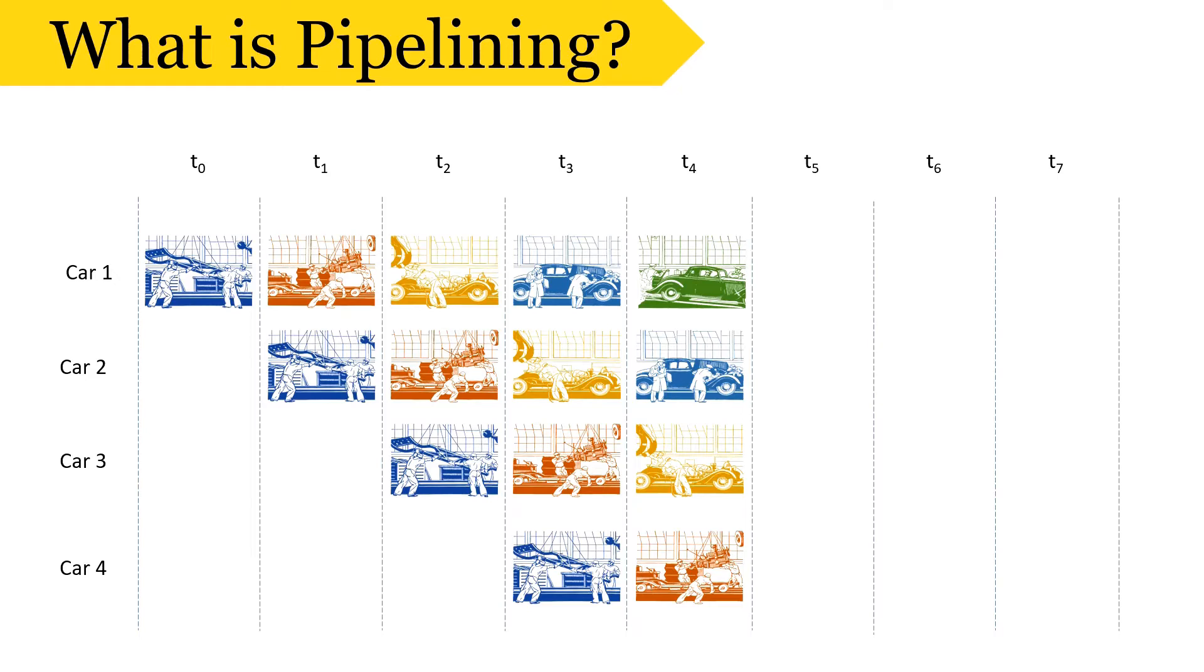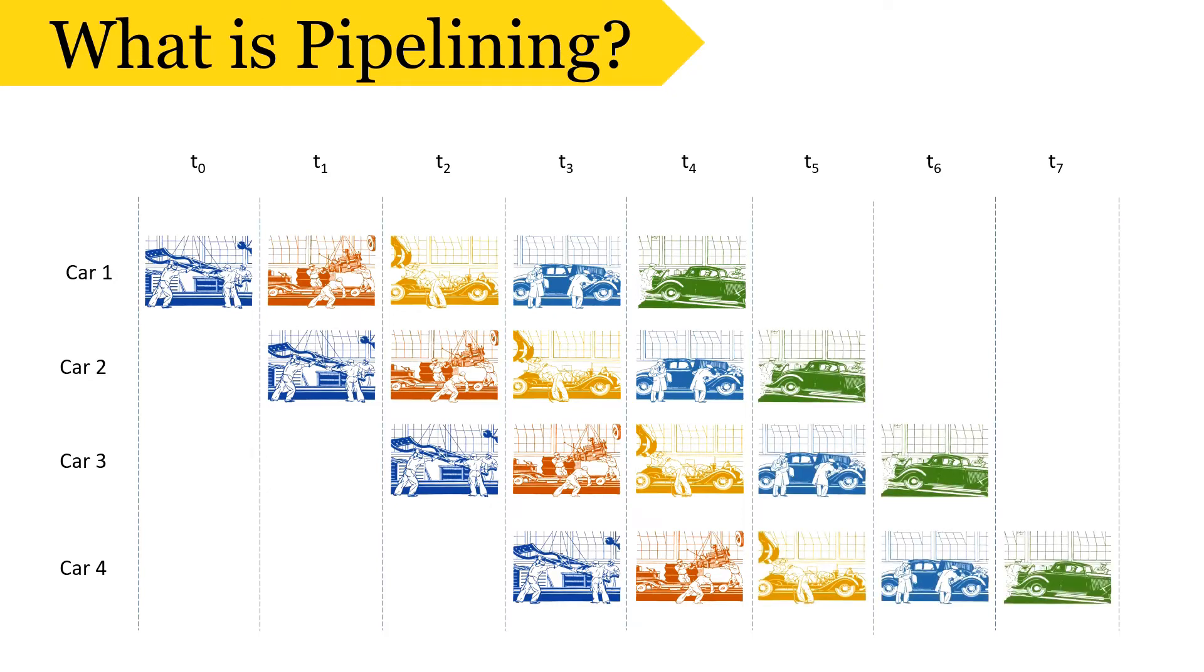So, here, after time T4, first car is delivered and after that, at each clock cycle, a new car is delivered. So, with pipelining, we can produce 4 cars by time T7, that means pipelining increases the throughput of car manufacturing plant. And if you can observe carefully, then you can see the output of previous group becomes input of next group.